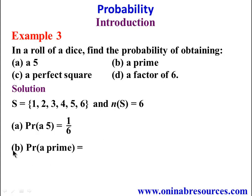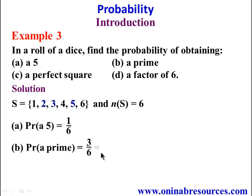For part B, we find the probability of obtaining a prime number. Looking at the sample space, the prime numbers are 2, 3, and 5. There are 3 prime numbers, so we have 3/6, which simplifies to 1/2 in its simplest form.